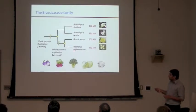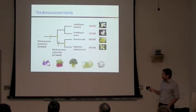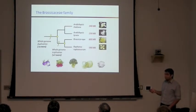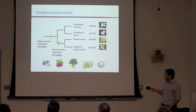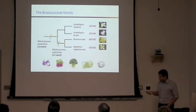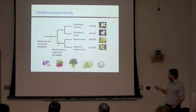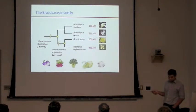In the Brassicaceae family, there are two known instances of whole genome duplication. One occurred about 65 to 70 million years ago, and another occurred about 20 to 30 million years ago in the evolutionary history of Brassicaceae and Radish. We intended to study both of these whole genome duplication events in this project. The Brassicaceae family includes several commercially important crops: turnips, broccoli, cabbage, cauliflower, all part of the Brassicaceae and Radish lineage.